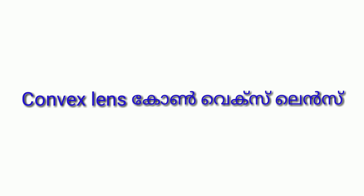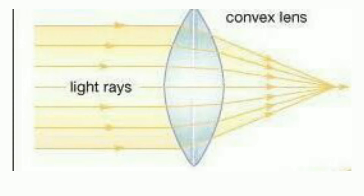It brings the light rays close to each other. It brings the light rays close together through the convex lens. The convex lens is called Converging Lens.